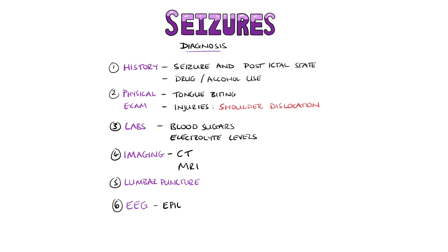Electroencephalograms are often used when an organic cause has not been identified and to investigate epilepsy. Prolactin has also previously been used, as a high level may indicate an epileptic seizure rather than a psychogenic seizure; however, a normal prolactin level does not exclude an epileptic seizure.